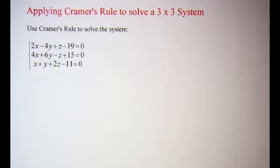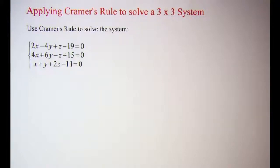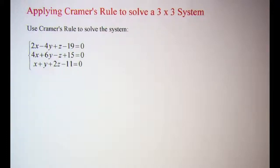In this video we will be applying Cramer's Rule to solve a system of three equations with three unknowns. To begin, we need to rewrite our equations so that the constants are on the right side of the equal sign and the variables are on the left.